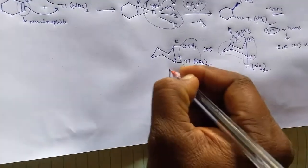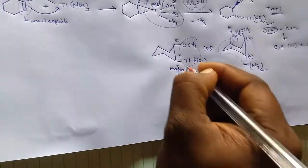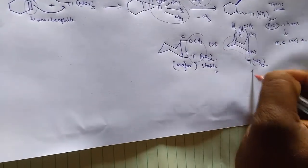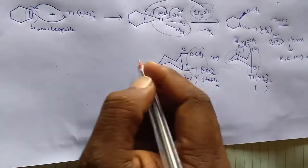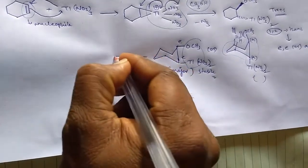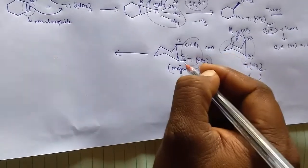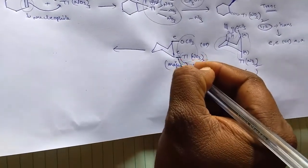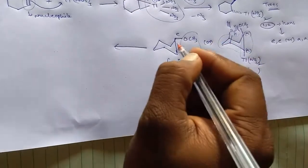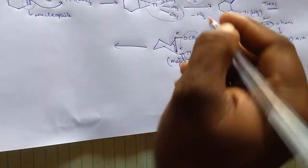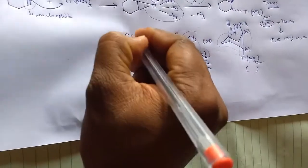Further, on the elimination of this thallium nitrate, thallium nitrate eliminates and this bond goes here. Another methoxy group attacks here.